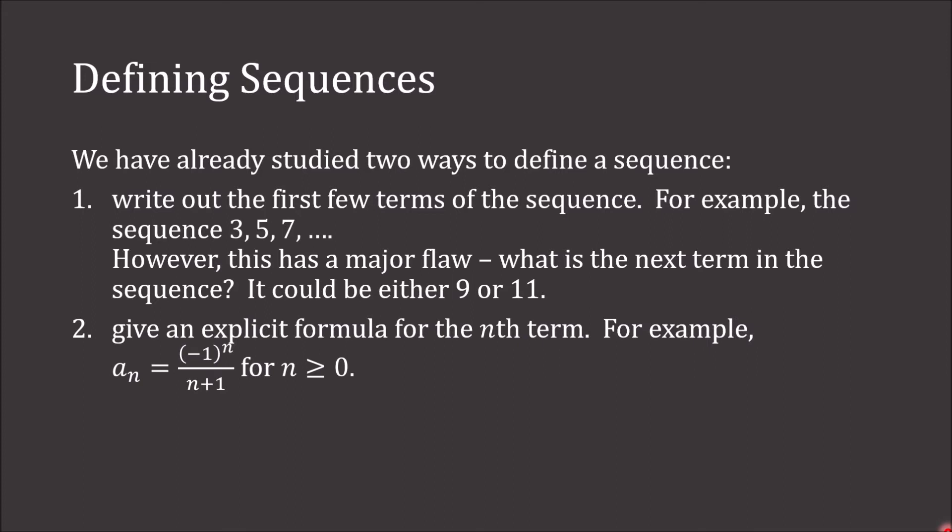The second way we studied was to give an explicit formula — for example, a sub n equals negative 1 to the n over n plus 1, for n greater than or equal to 0.